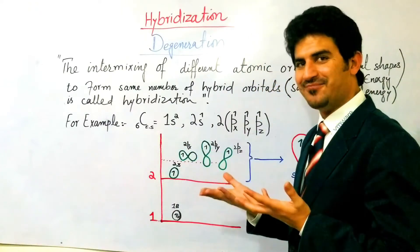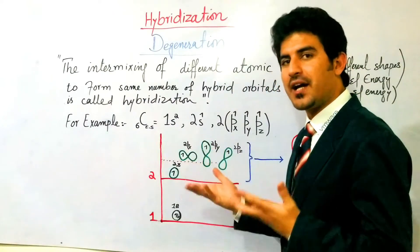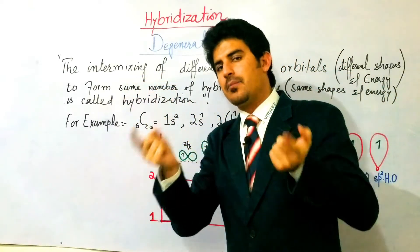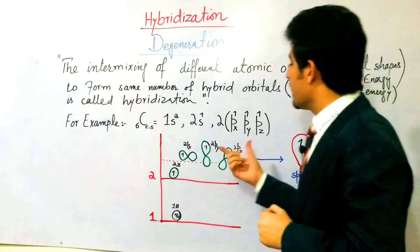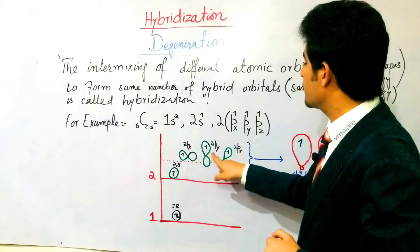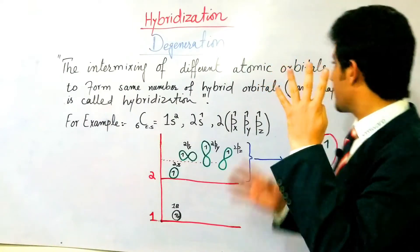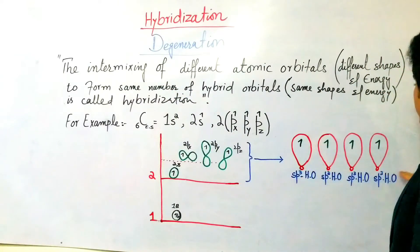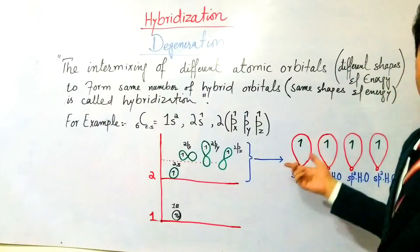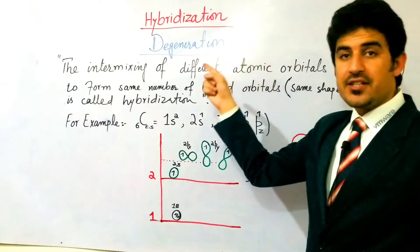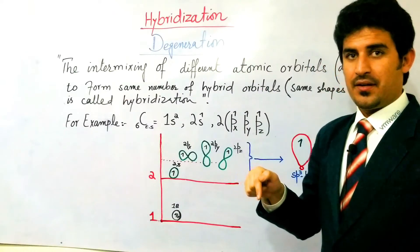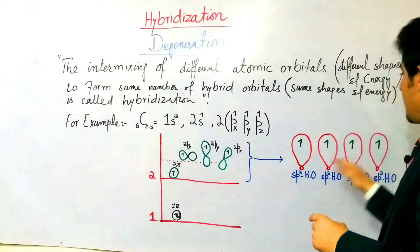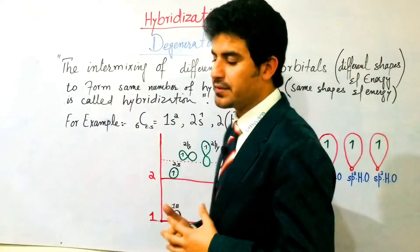These orbitals have different energy and different shapes. These different orbitals intermix in the hybridization process. Now four hybrid orbitals will form with the same shapes and same energy. This process is known as hybridization or degeneration.